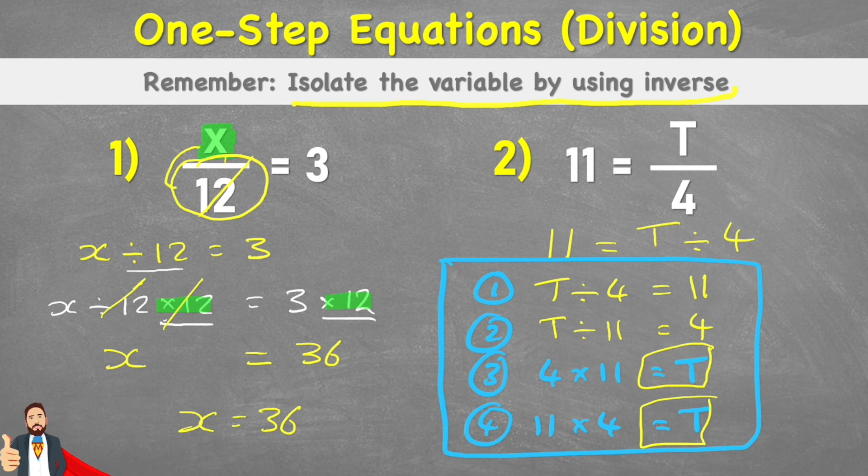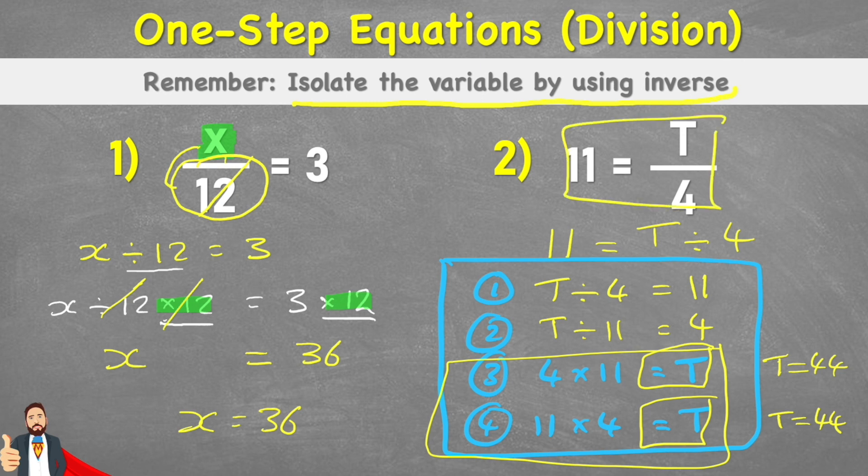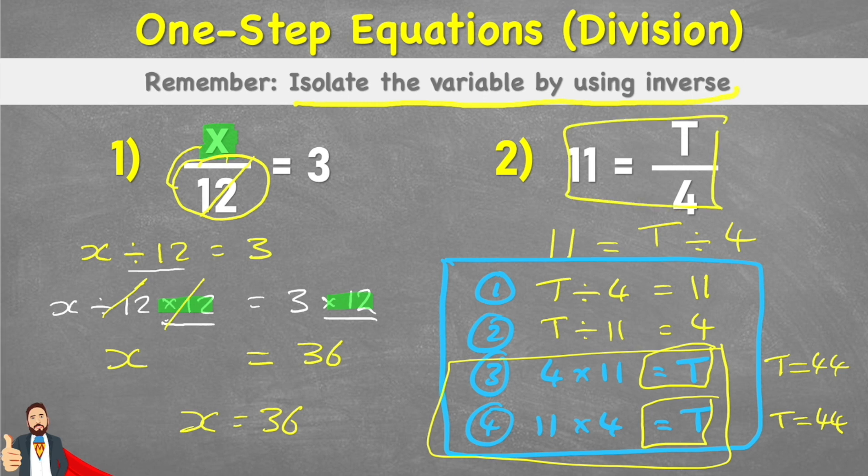4 times 11 equals t. So 4 times 11 is 44. So therefore, t equals 44. Let's just check that with the last one. 11 times 4 also equals 44, which therefore means t equals 44. So I can just use either of these two number sentences, which are the inverse of the question, to help me find that missing value. And there you go. That is two ways to solve a one step equation which involves division.